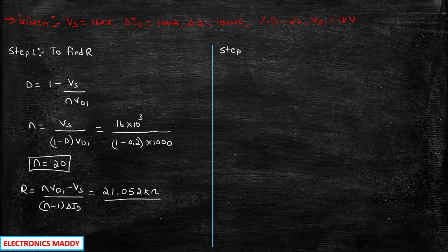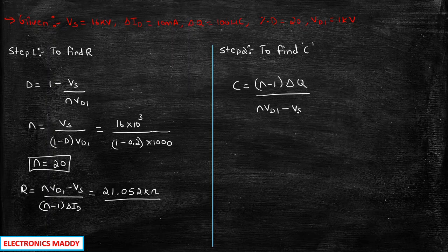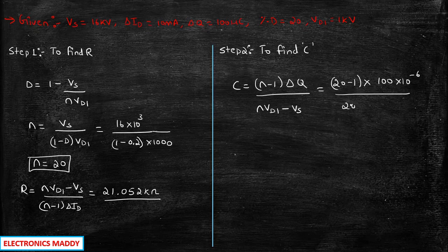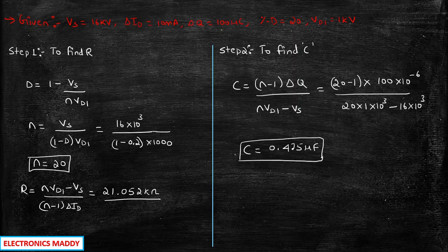Step two is to find the value of C. The formula is: C equals N minus 1 into delta Q, whole divided by N into Vd1 minus Vs. Substituting N equals 20, delta Q equals 100 micro coulomb, Vd1 equals 1 kV, and Vs equals 16 kV, and solving, you will be getting the value of C equal to 0.475 microfarad. So we have found both R and C, which is our requirement. Problem 3 is done.